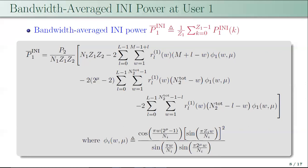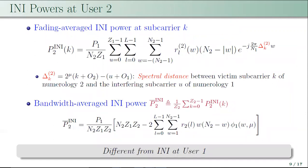The second metric is the bandwidth-averaged INI power, which is the mean of the fading-averaged INI powers across all subcarriers of the numerology. A closed-form expression has been derived and it depends on the channel autocorrelation and the transmit power of numerology 2. For user 2, the fading-averaged and bandwidth-averaged INI powers depend on the channel autocorrelation, the spectral distance, and the transmit power of numerology 1. These expressions differ from those of numerology 1, showing that INI caused by a wider numerology is not the same as that caused by a narrower numerology.